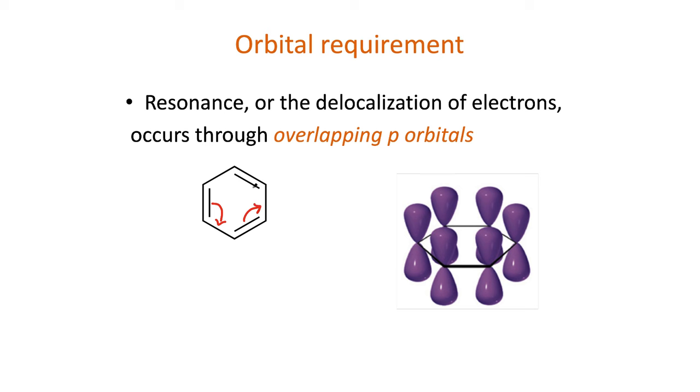For delocalization to be possible, a few requirements need to be met. First, p orbitals need to overlap to create a pi system. For example, benzene has two major and equivalent resonance structures, which contribute equally to the resonance hybrid.